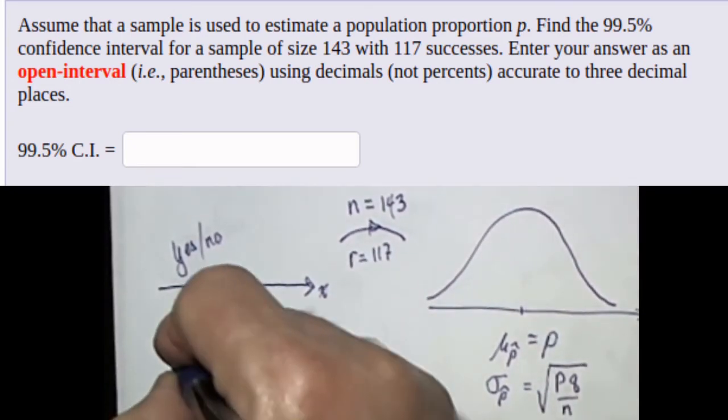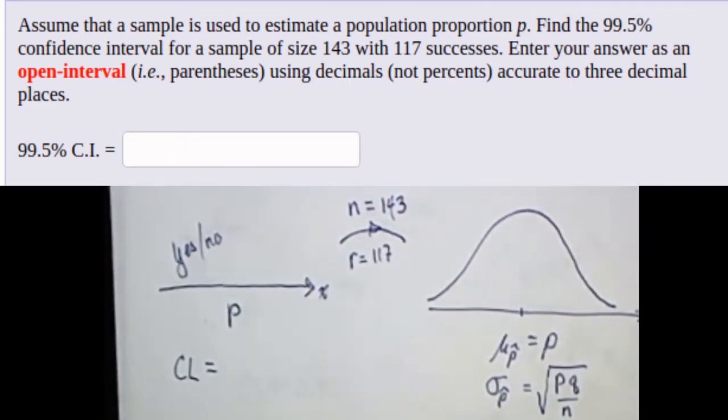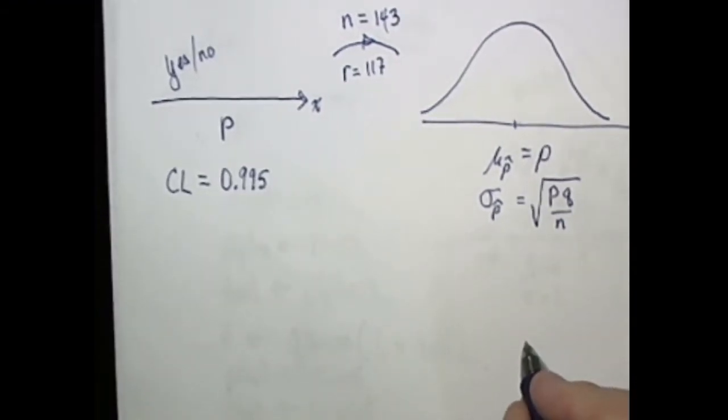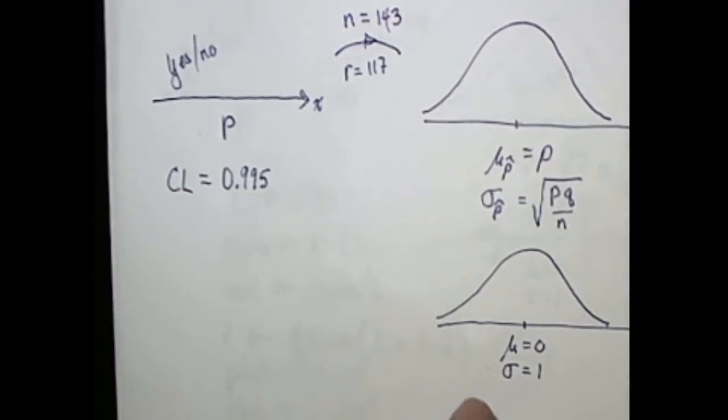Now we're interested in finding a confidence interval with a level of confidence of 99.5%. So let's look at our third distribution here. In proportion problems the third distribution is going to be a standard normal distribution, of course where the mean is zero and the standard deviation is one.